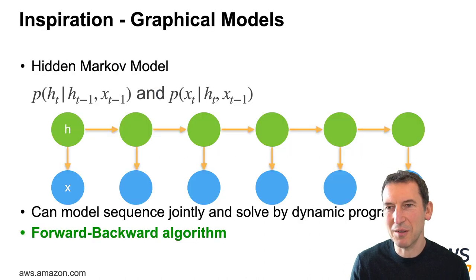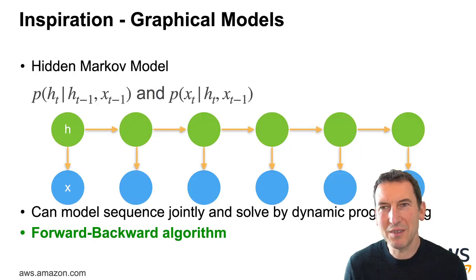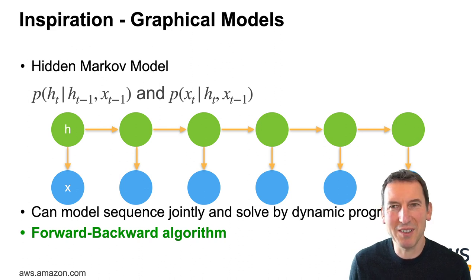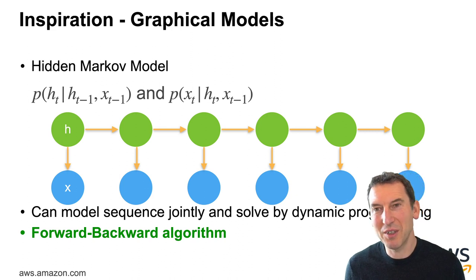So let's take a quick flashback to the time before deep learning, namely graphical models. So in a hidden Markov model, you also model the hidden state. So the hidden state ht is a function of ht minus 1, xt minus 1. And then I emit something. And so I can go and solve this model jointly by dynamic programming, where I can incorporate both past and future observations rather cleanly.